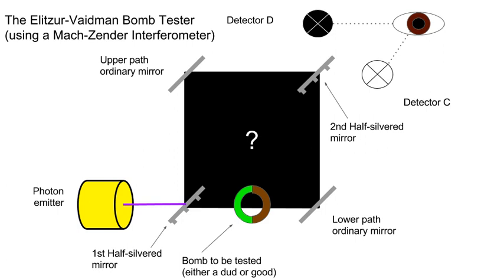It is also possible that it will not be detected by either. Based on this outcome, with a live bomb, there is a 50% chance it will explode, a 25% chance it will be identified as good without exploding, and a 25% chance there will be no result.